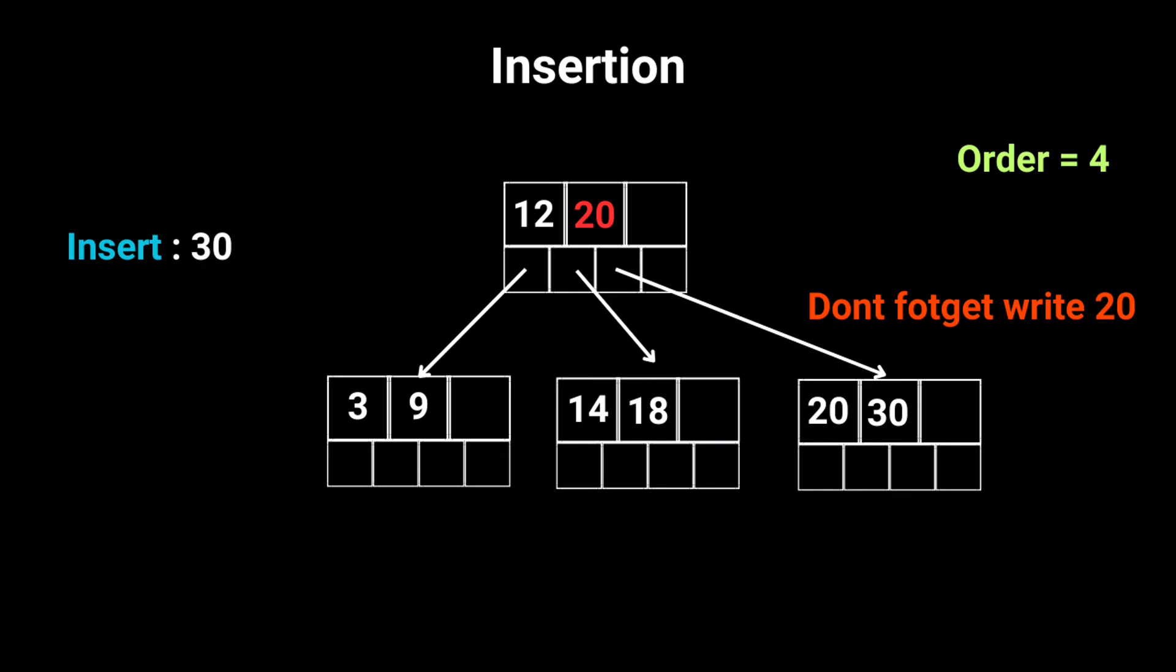So, why 20? Because it's the lowest key in the new node and it fits perfectly between 18 and 30. Now let's insert 10. We start at the root and find the right spot for 10, right here.